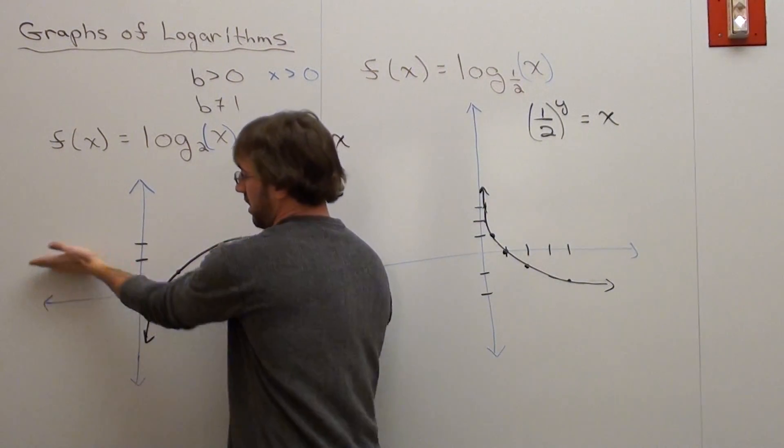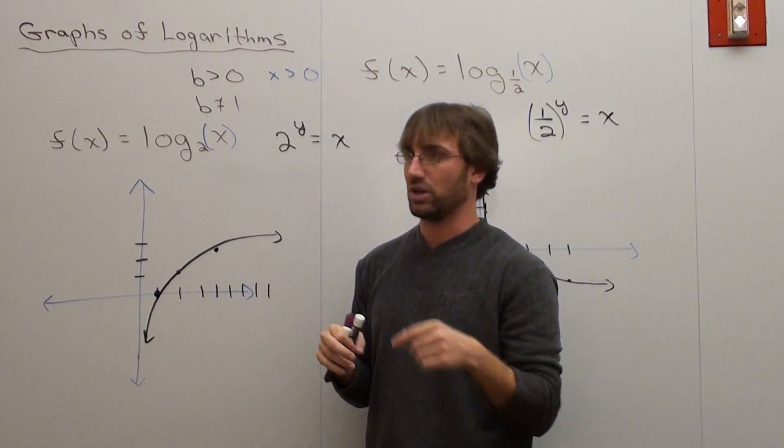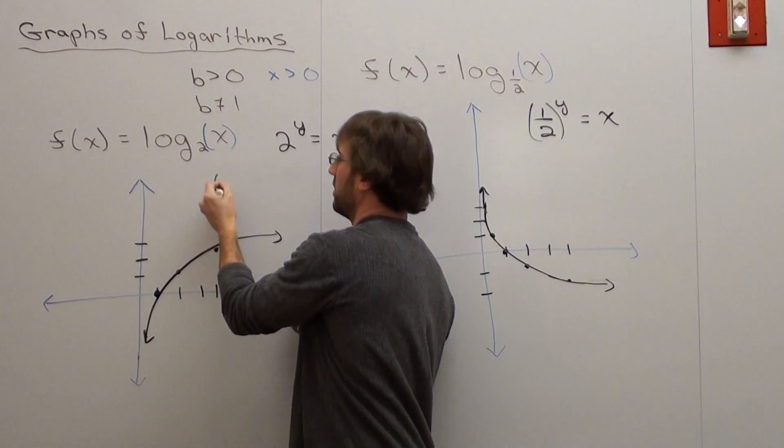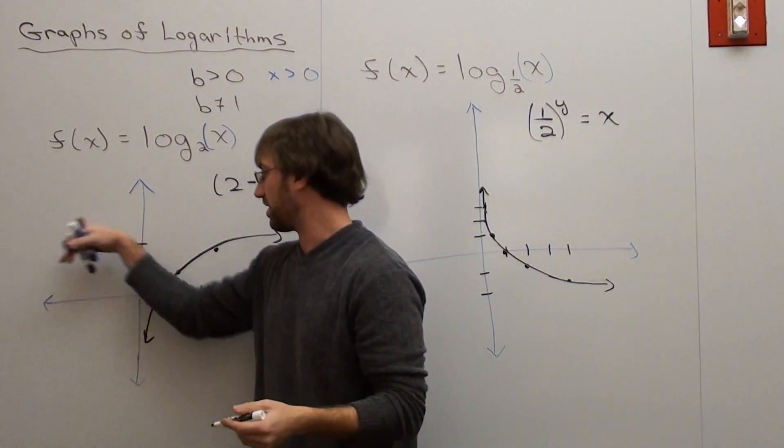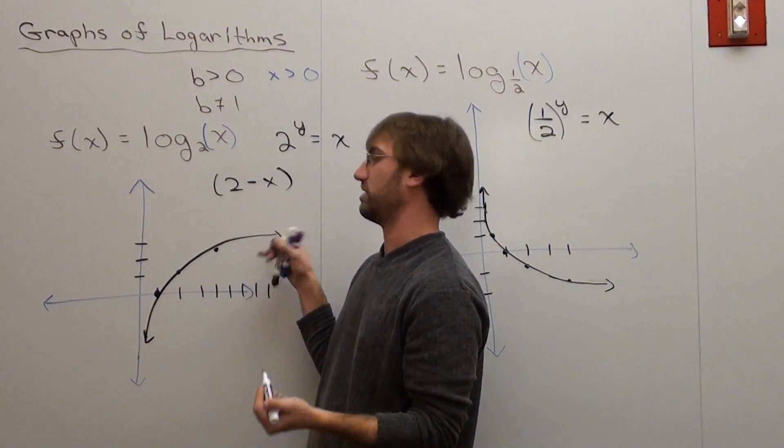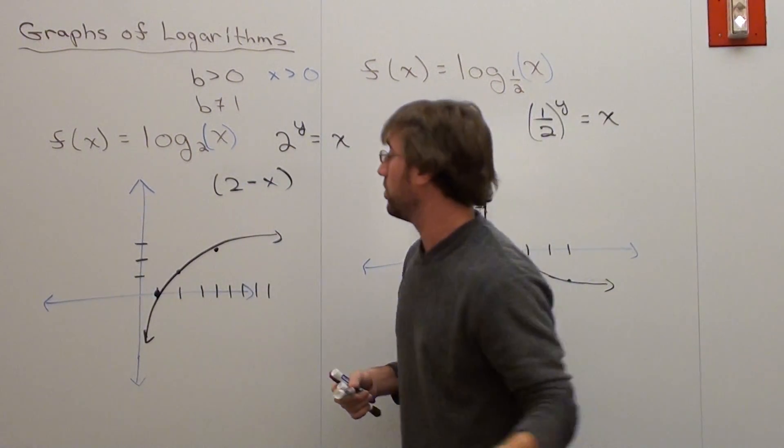Absolute value would look like this. If it was 2 subtracted by x, then it would be a mirror of x minus 2, so it would go like that. Well, this one isn't x minus 2, so it's not a mirror. But anyways, it's pretty cool.